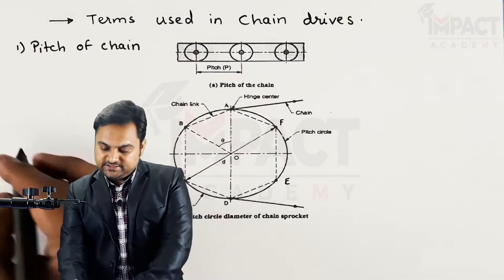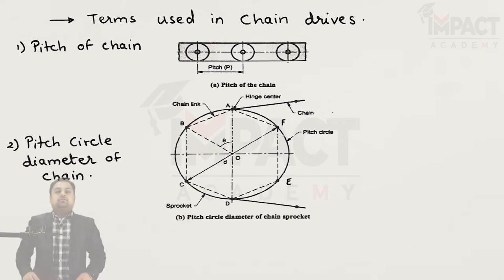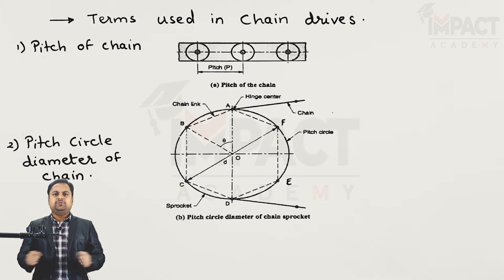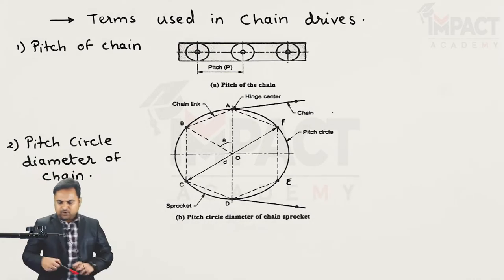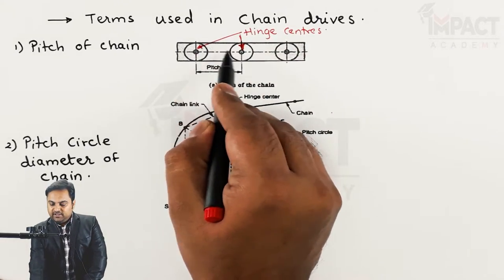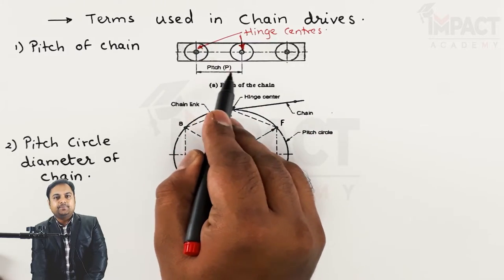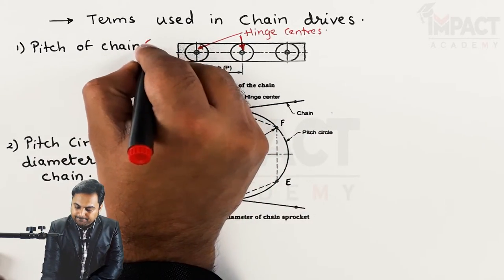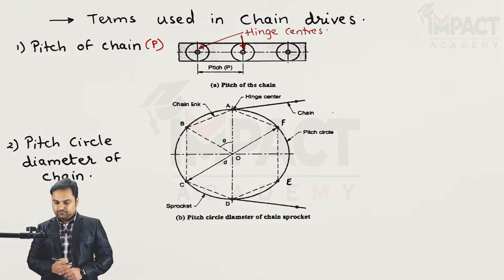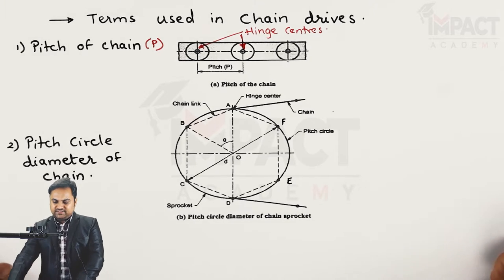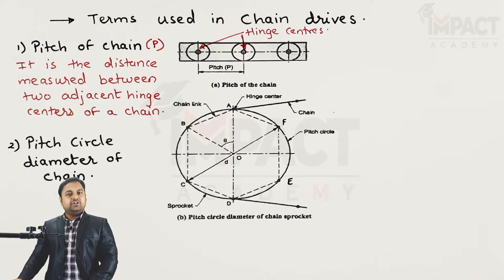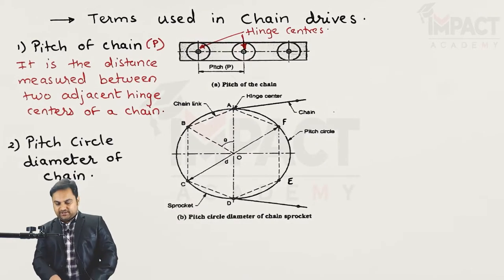The pitch of a chain means the distance measured between two hinge centers. On a chain we have a number of hinge centers, so when we measure the distance between adjacent hinge centers, that is called the pitch of the chain, denoted by P. This pitch remains constant throughout the length of the chain.